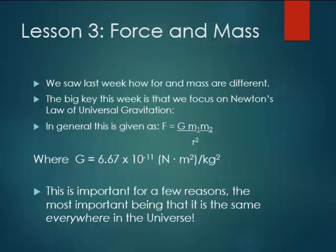m1 and m2 are the masses involved, and r is the distance between the objects. g again has a value of 6.67 times 10 to the minus 11 newton meters squared per kilogram squared. By the way, those units just come from looking at the graph of force versus the product of mass over distance, and that's the slope. This is important for a few reasons, the most important being that it is the same everywhere in the universe. This is one of the biggest parts of his law of gravitation was the word universal.